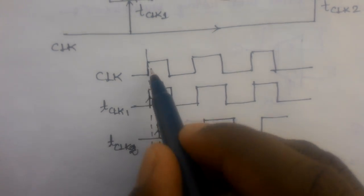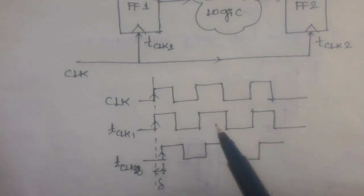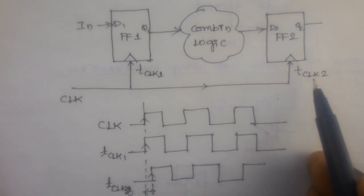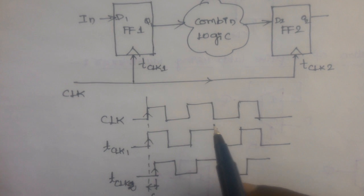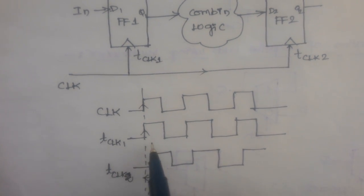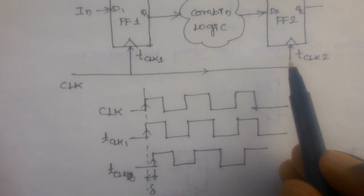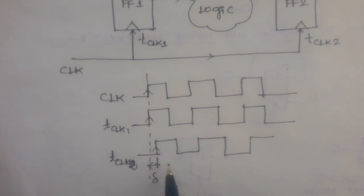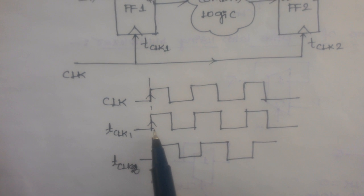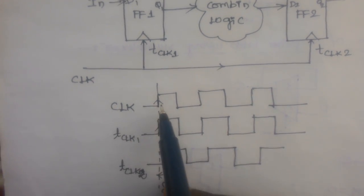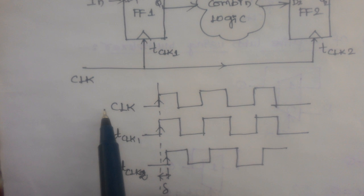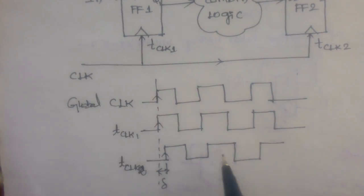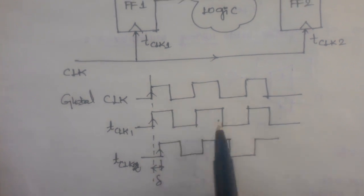Here it is considered as a positive edge, since a flip-flop is a positive edge triggered device. The arrival time of the clock to each flip-flop is different — we define this as clock skew. The clock 1 edge arrives similar to the global clock.